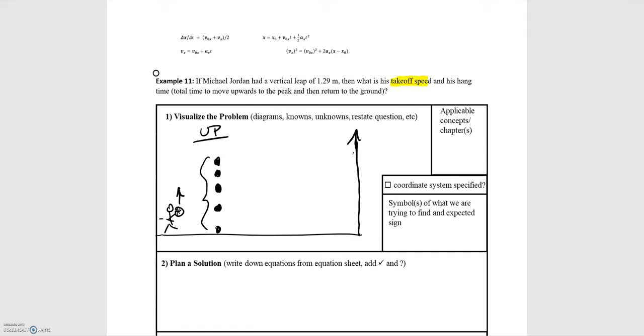So we're asked to find two things: the takeoff speed and the hang time, where the hang time is the time that it takes for him to go up and then return back to the ground. We're also given information that he can jump 1.29 meters up in the air, so that's his maximum height in the air.